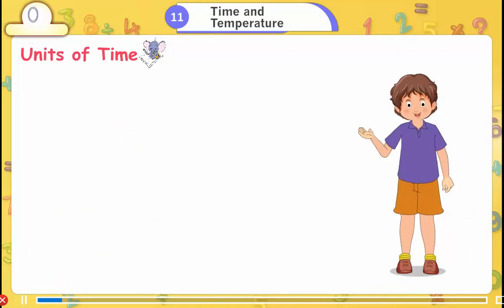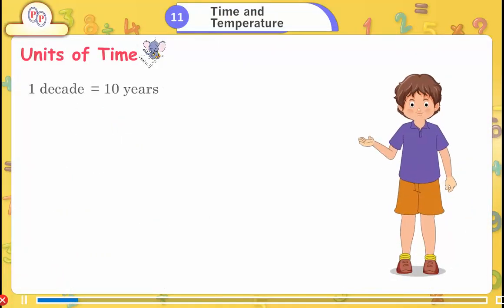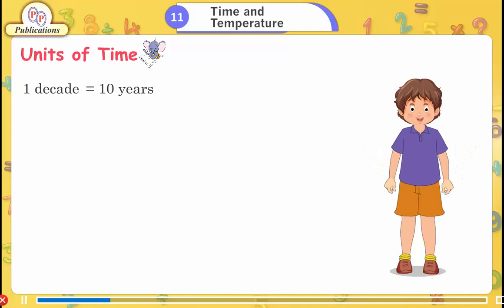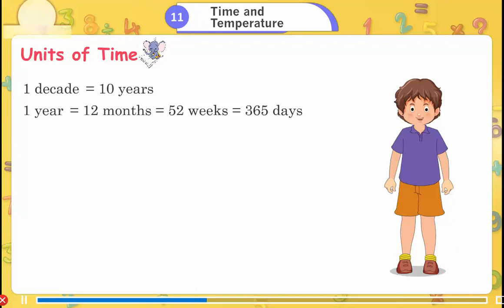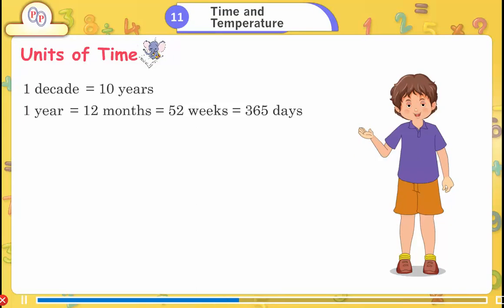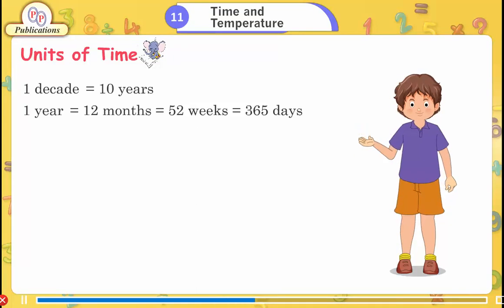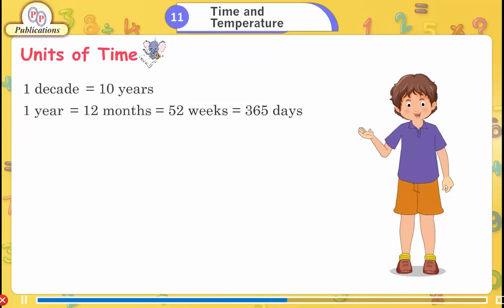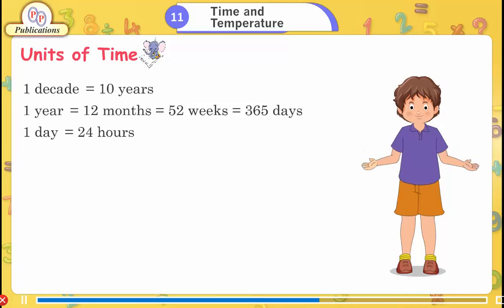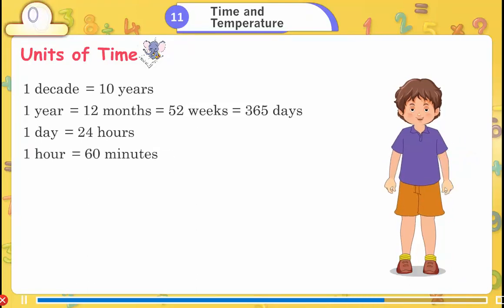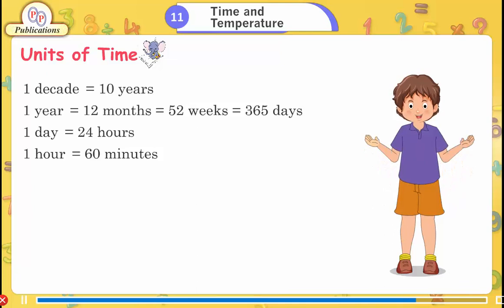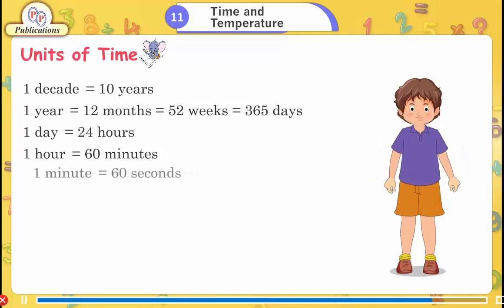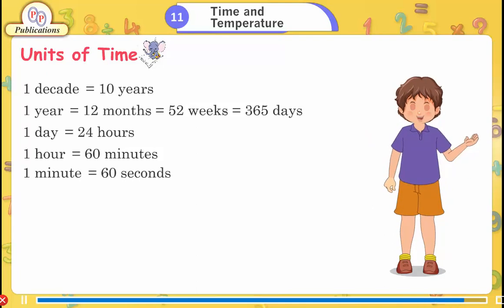Units of Time: One decade equals 10 years. One year equals 12 months, 52 weeks, or 365 days. One day equals 24 hours. One hour equals 60 minutes. One minute equals 60 seconds.